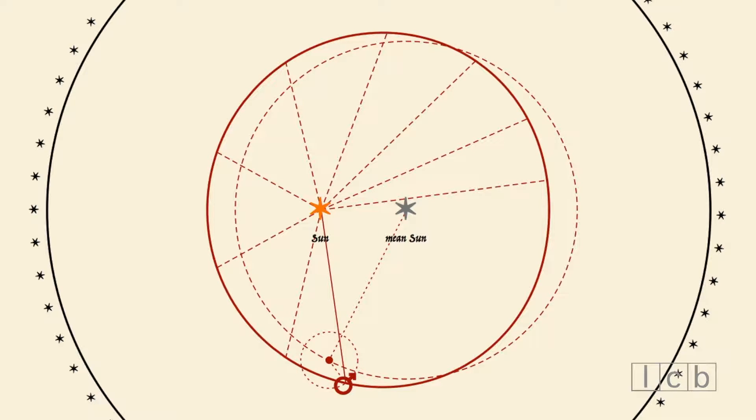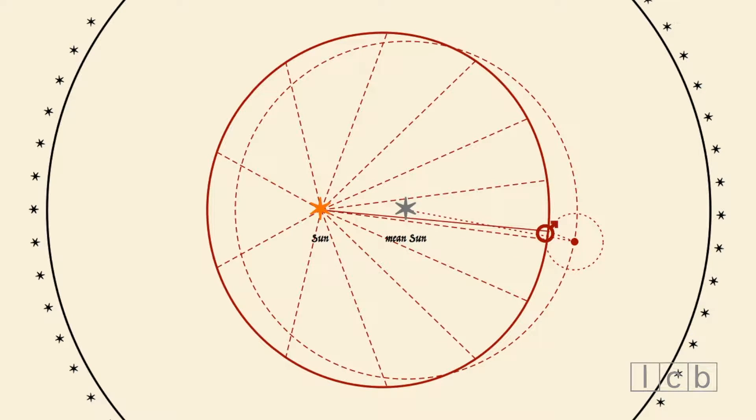This produces an oval orbit with the planet slowing down at the aphelion, the farthest point from the real Sun, and accelerating when approaching the perihelion, the closest point to the real Sun.